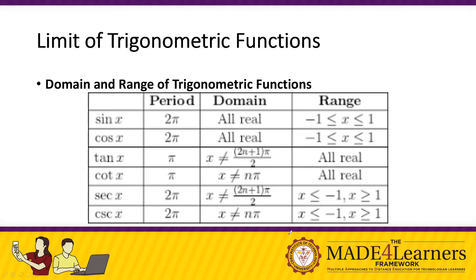First, we have the sine and the cosine function. The sine function, sine x, has a period of 2π. For cosine, it's the same — 2π. The domain, or the values permissible for the angle x (our variable), are all real numbers.